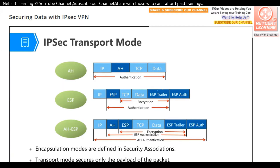How can we know whether data is in the VPN or not? What is the difference between VPN data and non-VPN data? That is the encapsulation of IPSec. For IPSec encapsulation, we have two modes: transport mode and tunnel mode. The encapsulation mode helps protect IPSec VPN data. Let's first look at transport mode.